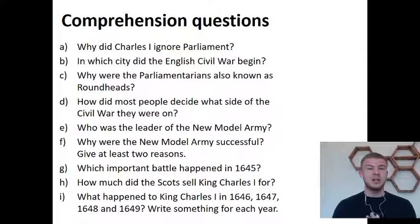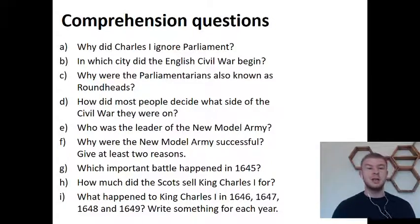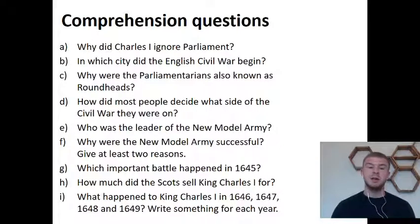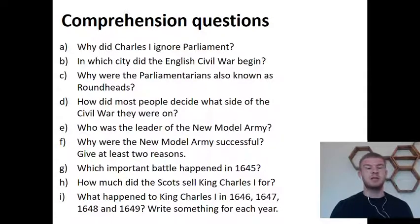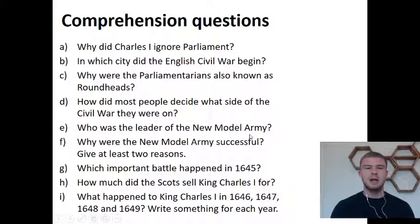You've listened to the lesson and looked at the slides. Now you've got some comprehension questions to answer — most should take about one sentence, some just one word. A: Why did Charles I ignore Parliament? B: In which city did the English Civil War begin? C: Why were the parliamentarians also known as roundheads? D: How did most people decide what side of the Civil War they were on? E: Who was the leader of the New Model Army? F: Why were the New Model Army successful — give at least two reasons. G: Which important battle happened in 1645? H: How much did the Scots sell King Charles I for? I: What happened to King Charles I in 1646, 1647, 1648, and 1649 — write something for each year.